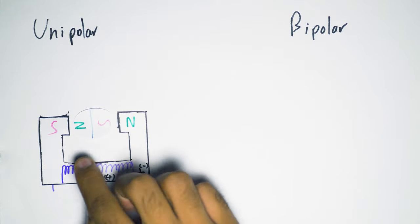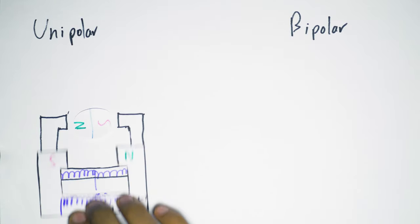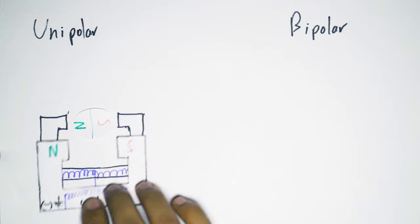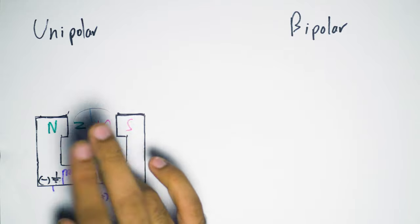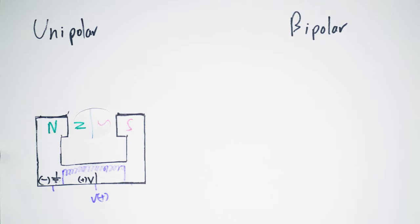Now if we wanted to switch this rotor around and make it turn the other direction, what we could do is simply reverse the polarity. So instead of ground being connected here, now ground is connected to this side of the coil, which induces electromagnetic force in the opposite direction. So now it's going to rotate in the other direction. It's simple as that.